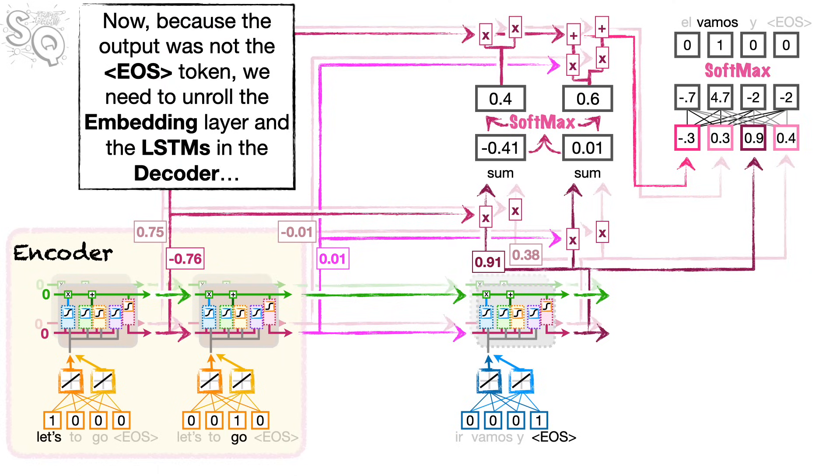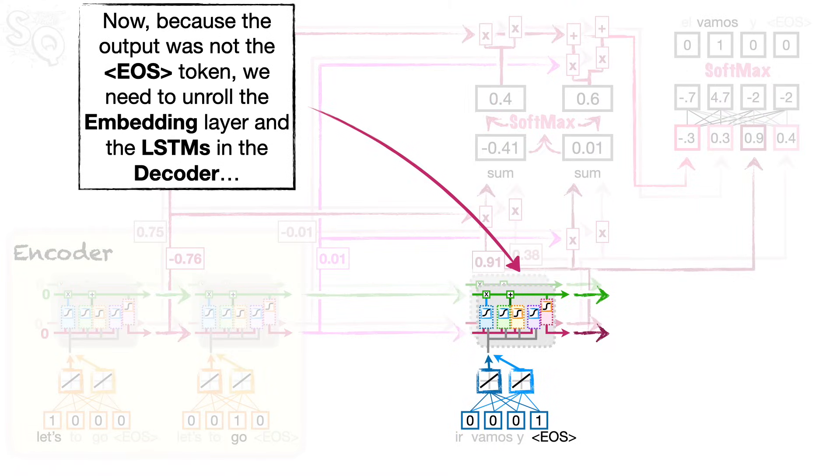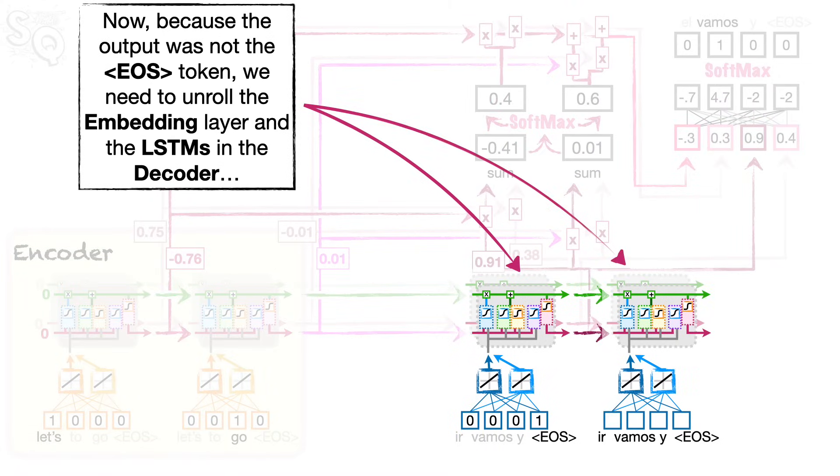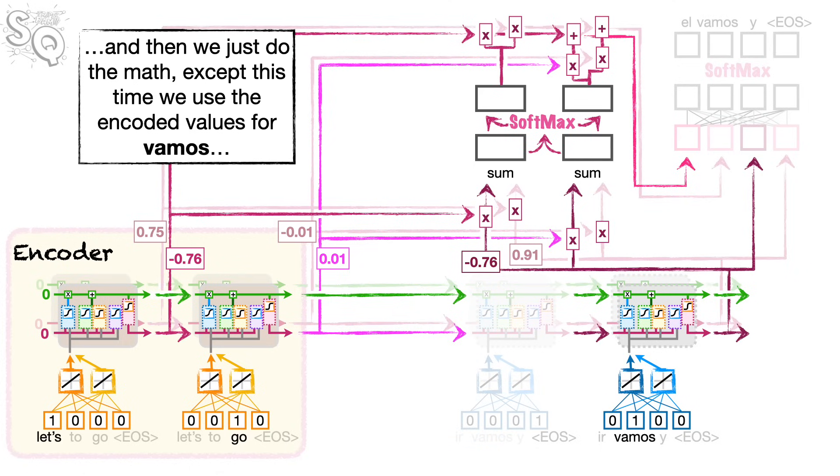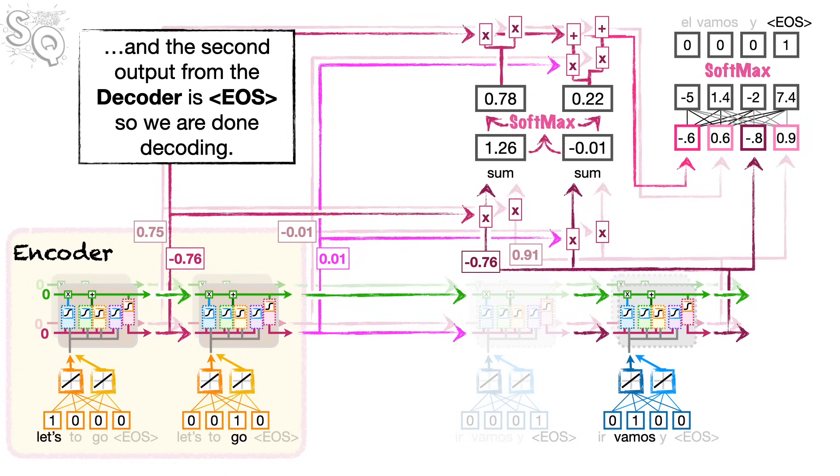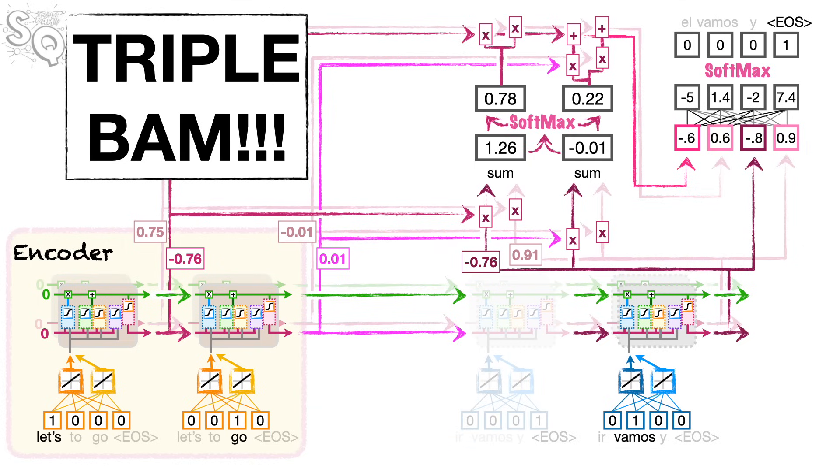Now, because the output was not the EOS token, we need to unroll the embedding layer and the LSTMs in the decoder. And plug the translated word, VAMOS, into the decoder's unrolled embedding layer. And then we just do the math, except this time we use the encoded values for VAMOS. And the second output from the decoder is EOS, so we're done decoding. Triple BAM!